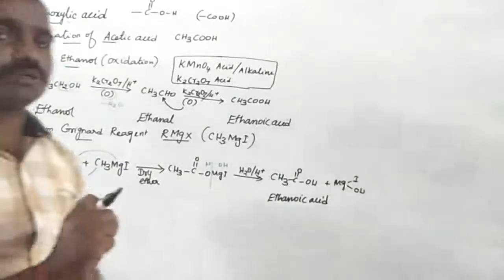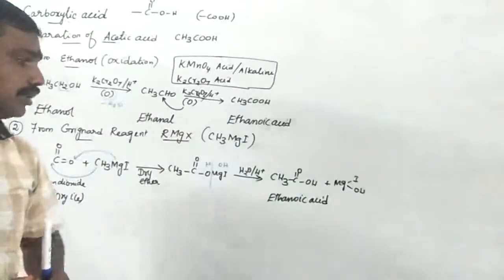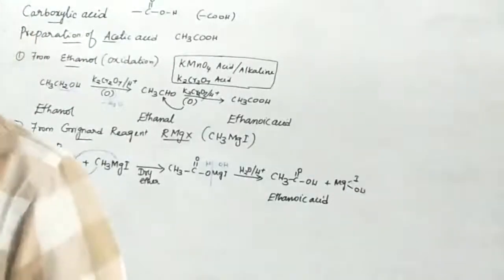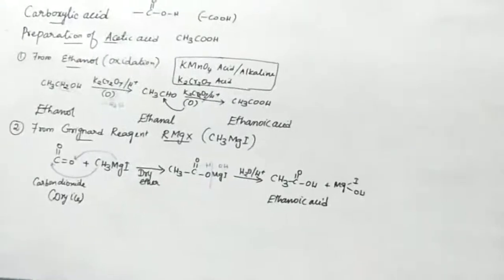Totally five methods we prepare acetic acid. Okay, totally five methods we prepare. Two methods the compound we prepare.